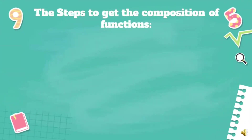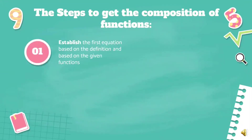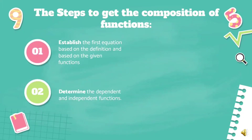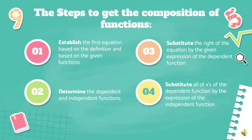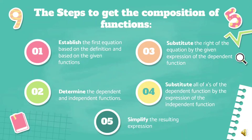These are the steps to get the composition of functions. Number one, establish the first equation based on the definition and based on the given functions. Number two, determine the dependent and independent functions. Number three, substitute the right of the equation by the given expression of the dependent function. Number four, substitute all of the x of the dependent function by the expression of the independent function. And number five, simplify the resulting expression.